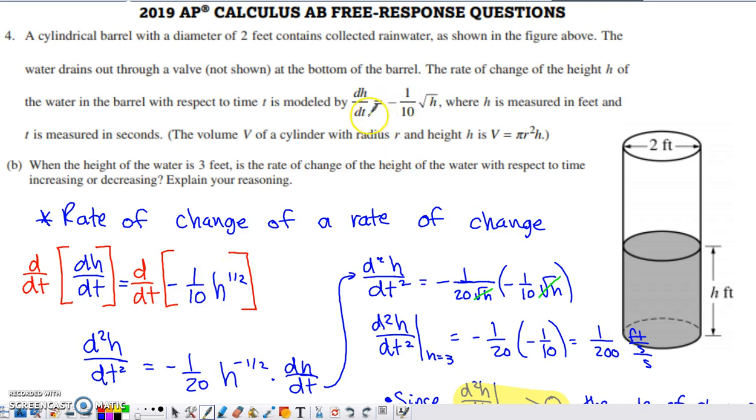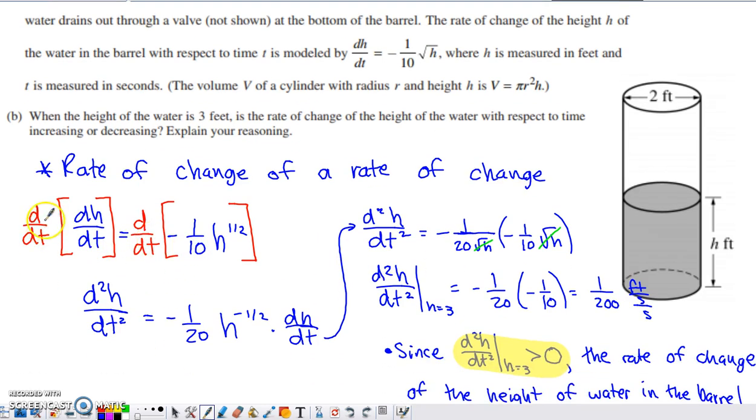This is the rate of change of height. If we're asked about the rate of change of the rate of change of height, we're going to have to analyze the second derivative of h with respect to t. So I took the derivative of both sides of this with respect to t. I get my second derivative of h with respect to time on the left immediately after taking the derivative of the left side of dh/dt.